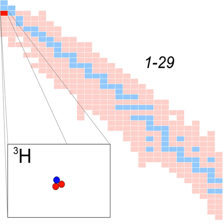Tritium occurs naturally due to cosmic rays interacting with atmospheric gases. In the most important reaction for natural production, a fast neutron interacts with atmospheric nitrogen. Worldwide, the production of tritium from natural sources is 148 PBq per year. The global equilibrium inventory of tritium created by natural sources remains approximately constant at 2,590 PBq, due to a fixed production rate and losses proportional to the inventory.